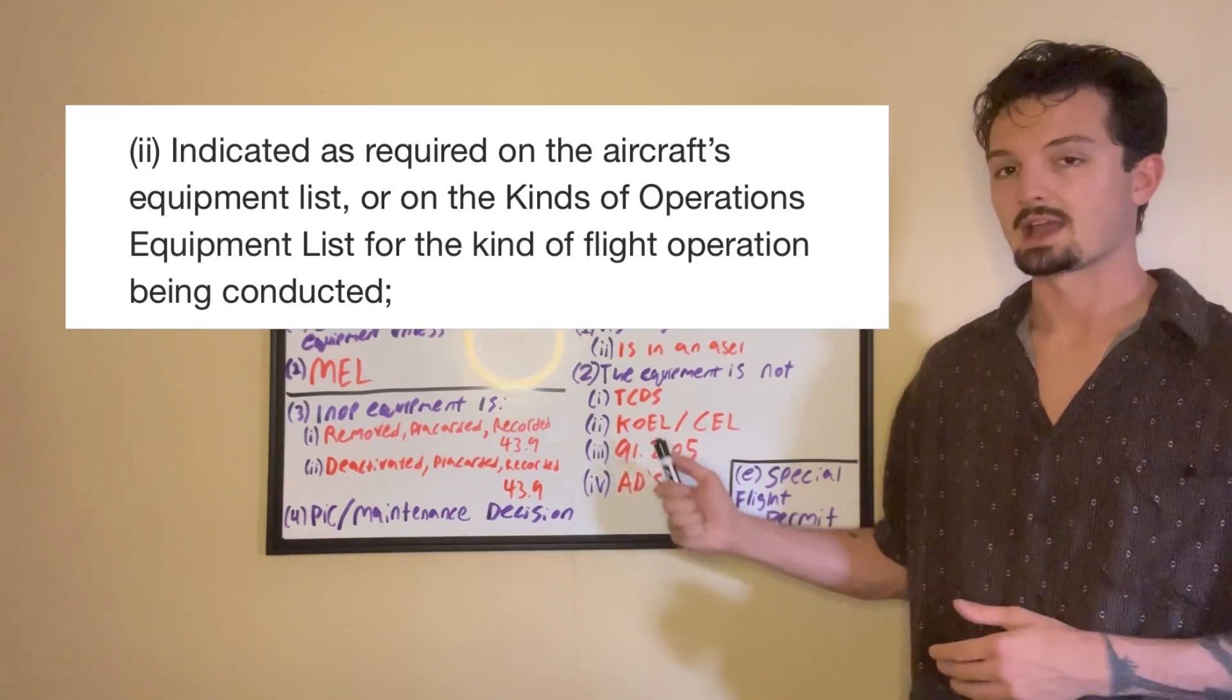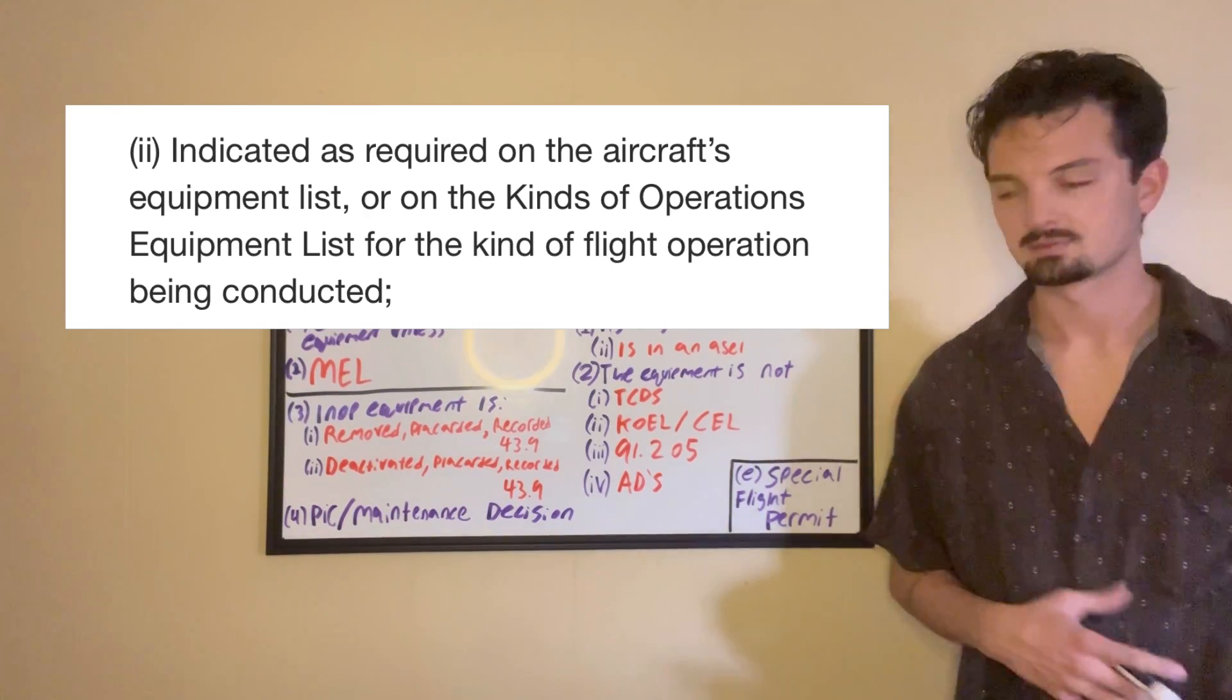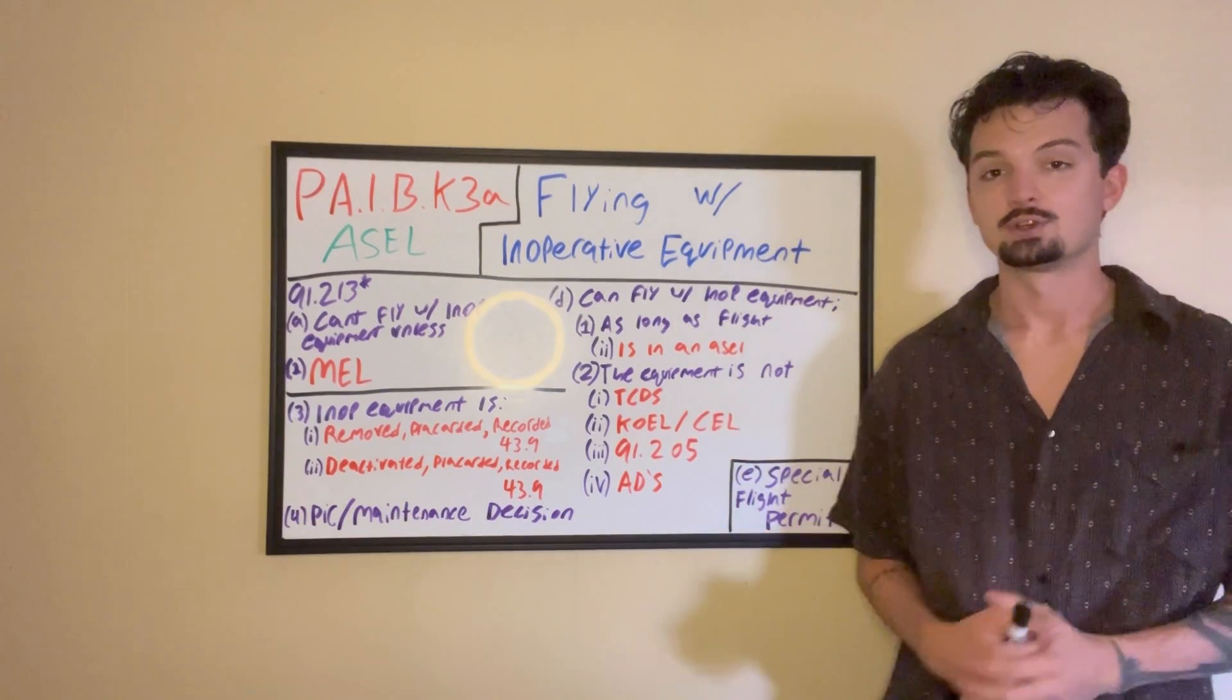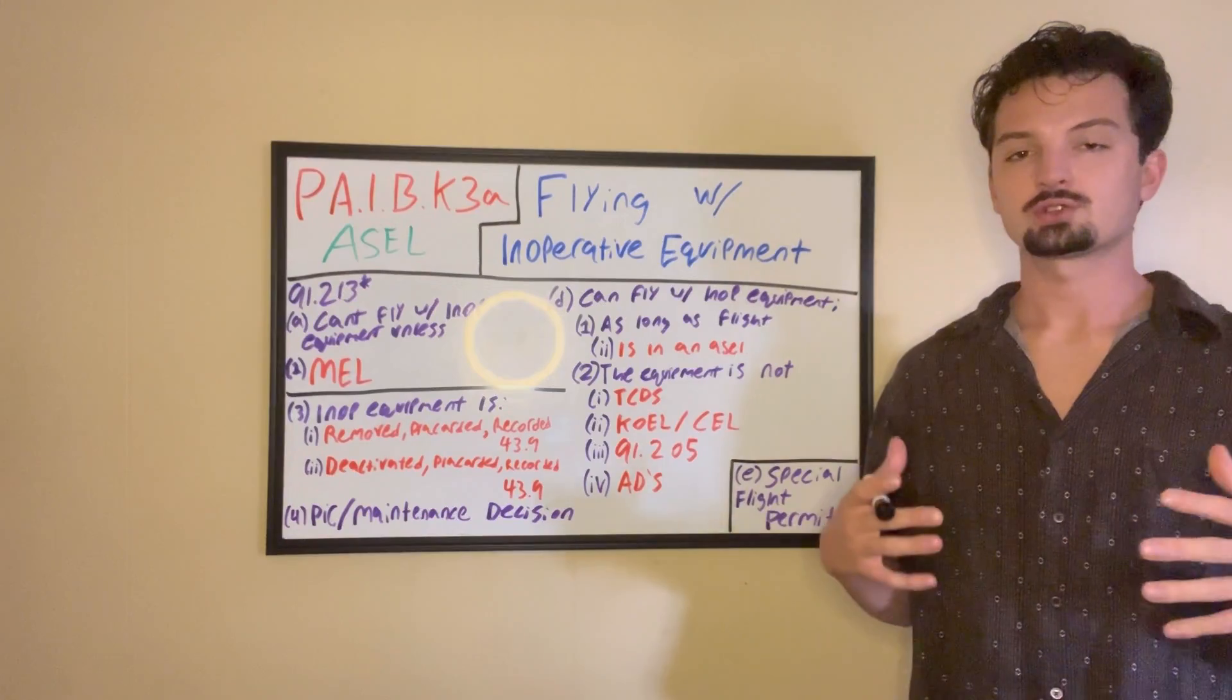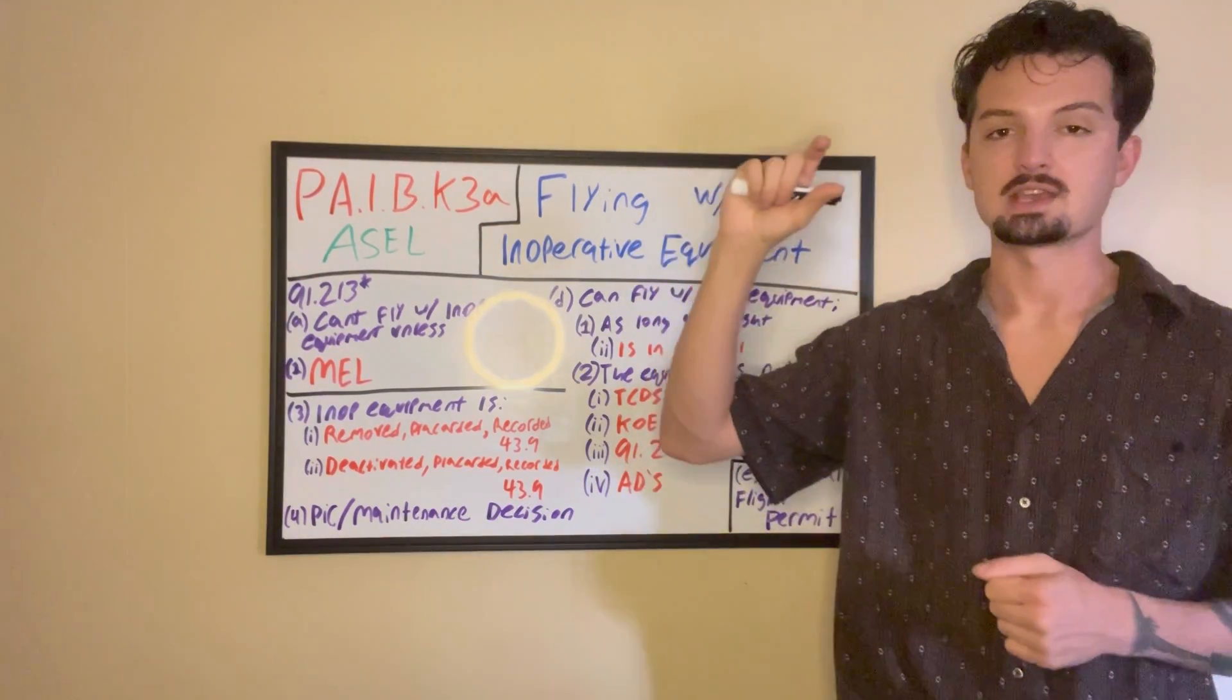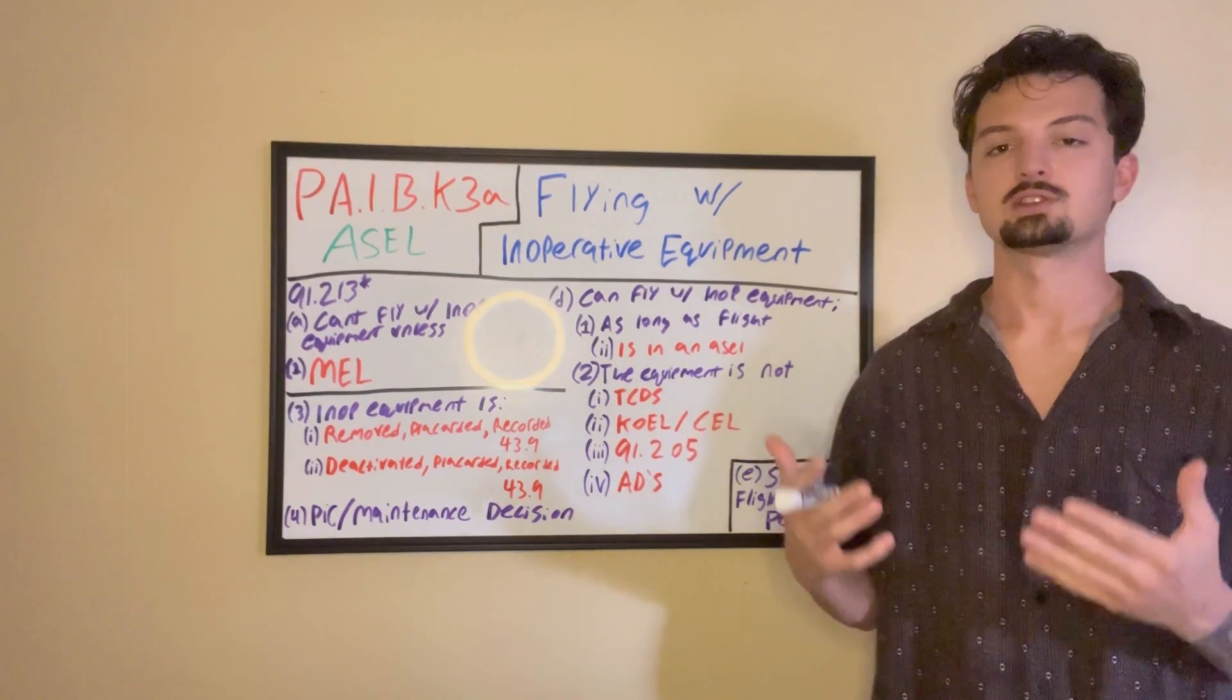If it's not required in there, then you can move on to I-I, which is going to be your K-O-E-L or your C-E-L, which is your kinds of equipment list or your comprehensive equipment list. Now, you're probably going to have one or the other, but both are similar things, and they're going to be found in your P-O-H. And if you don't know what a P-O-H is, you need to go back a couple videos, start from the beginning. But essentially, your comprehensive equipment list is going to be all the equipment installed in your plane, and the list also states whether or not that equipment is required or not.